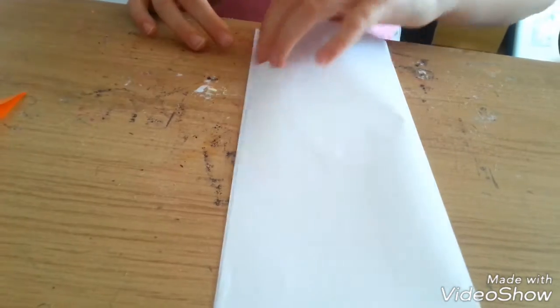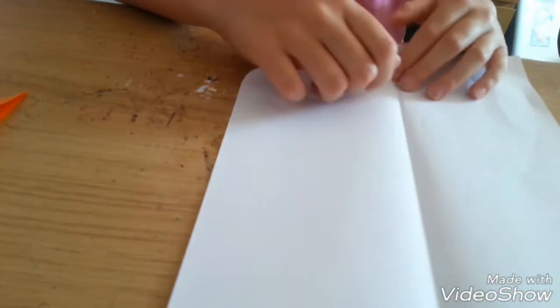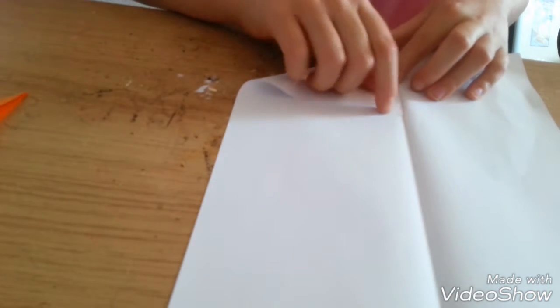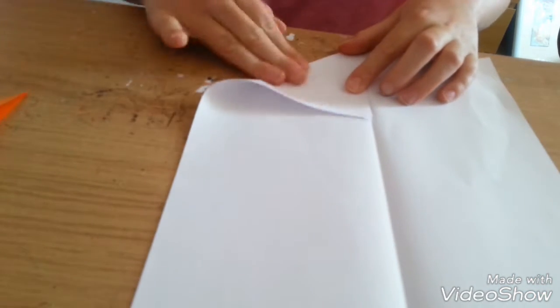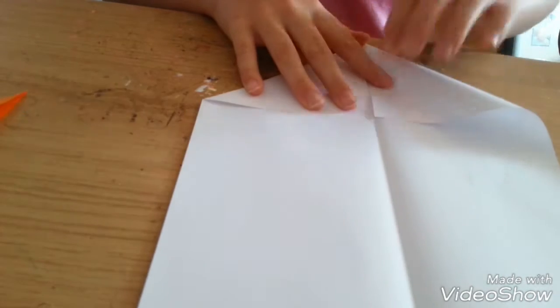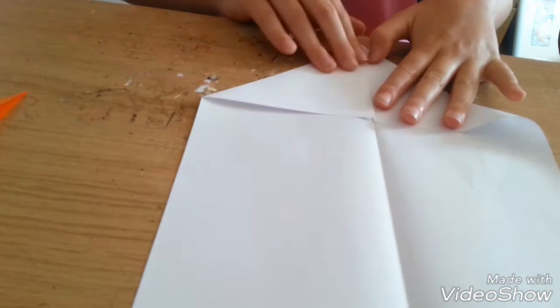So then, fold your piece of paper in half. Do two triangles which are pointing to the middle center line that we folded before. Like this.